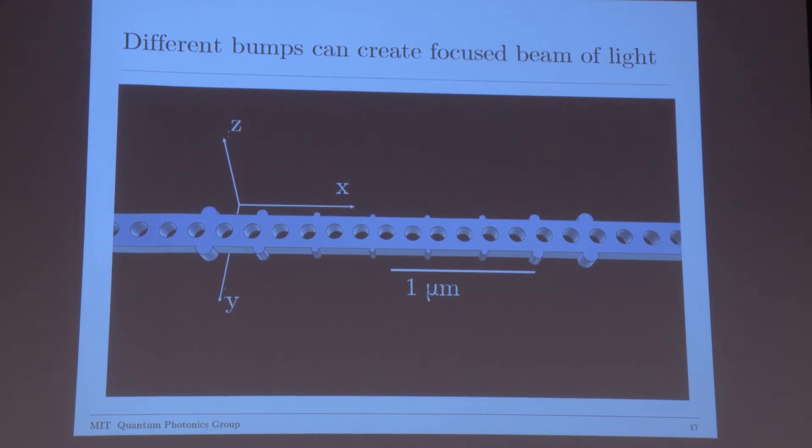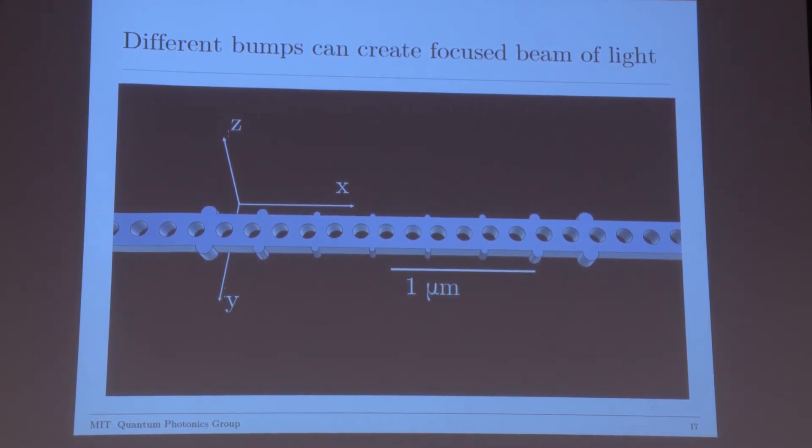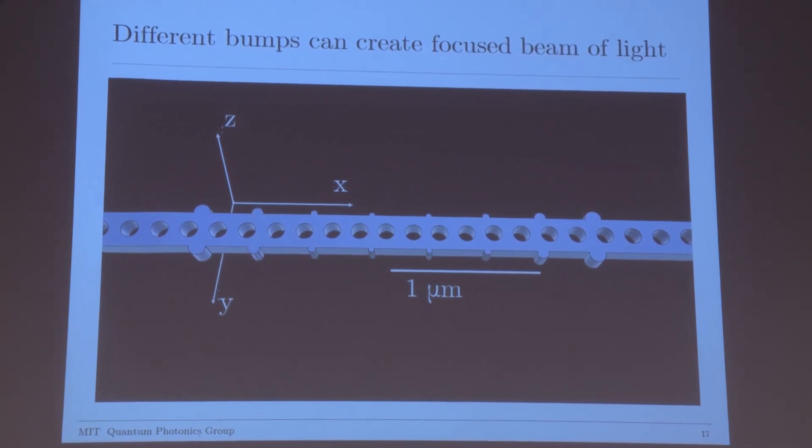This is what we came up with. So the bumps are increasing in size as you move further outwards. And this is because you want scatterers that all emit light at the same strength. If we observe the behavior of the scatterers as sources, we see that they act like point sources of the wave that is emitted, and create constructive interference right above the cavity.